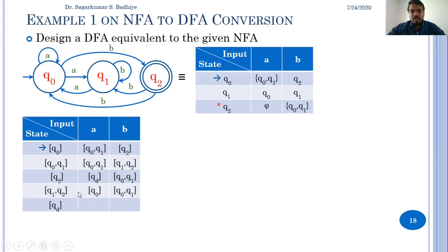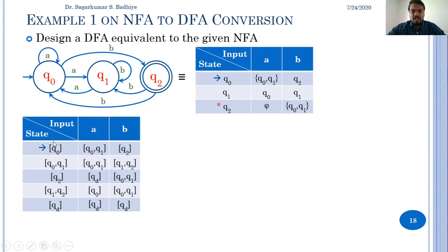qd is the dead state — on any input a dead state transitions to itself. So we add transitions from qd on 'a' to qd and from qd on 'b' to qd. Now all states from the next state column have been added to the present state column, so we stop. These are all the states in the equivalent DFA. The final states of the DFA are all states that contain the final state of the NFA, which is q2, so q2 and [q1, q2] are marked as final states.